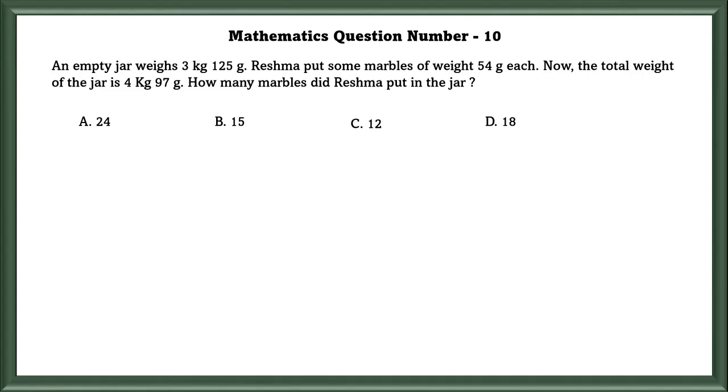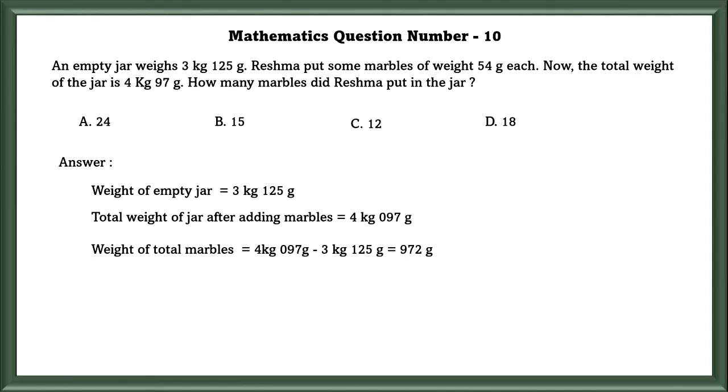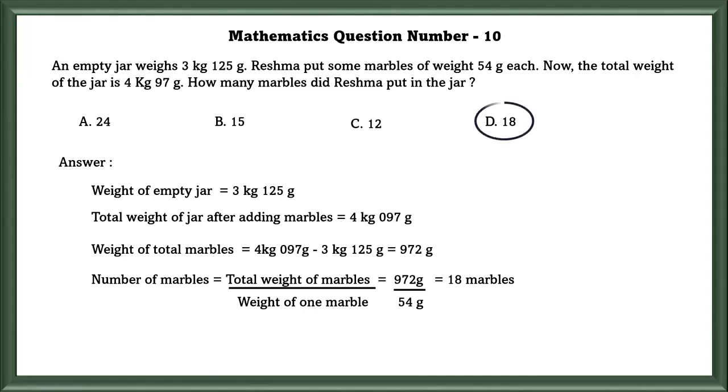Mathematics Question Number 10: An empty jar weighs 3 kg 125 grams. Reshma puts some marbles of weight 54 grams each. Now the total weight of the jar is 4 kg 97 grams. How many marbles did Reshma put in the jar? An empty jar is equal to 3 kg 125 grams. Weight of jar after adding marbles is equal to 4 kg 97 grams. So weight of marbles is equal to 4 kg 97 grams minus 3 kg 125 grams, that is equal to 972 grams. So the weight of all the marbles Reshma put is equal to 972 grams. To find the number of marbles, we have to divide the total weight of the marbles by one marble. That is equal to 18 marbles. So she put 18 marbles in the jar.